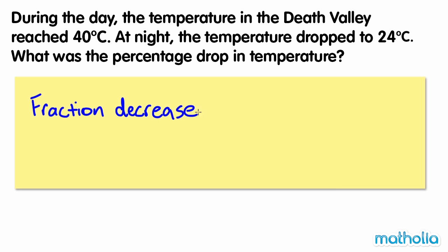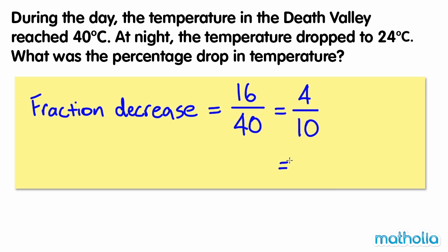The fraction decrease equals 16 over 40, which can be simplified to 4 tenths. 4 tenths equals 40 over 100, which is 40%. So the temperature dropped by 40%.